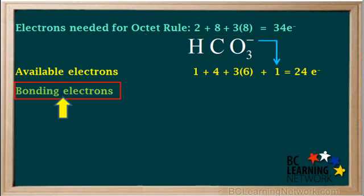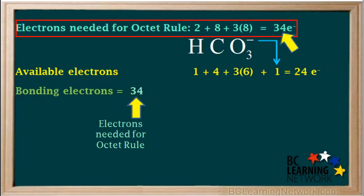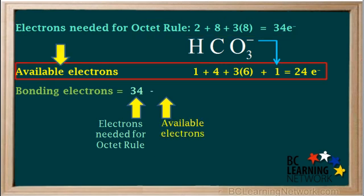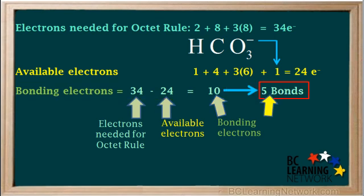The next step is to calculate the number of bonding electrons. We calculate this by taking the number of electrons needed to satisfy the octet rule, which is 34, and subtracting the number of available electrons, which is 24. So we have 34 minus 24, which equals 10 bonding electrons. Since each bond needs two electrons, this means that the ion has a total of five bonds.